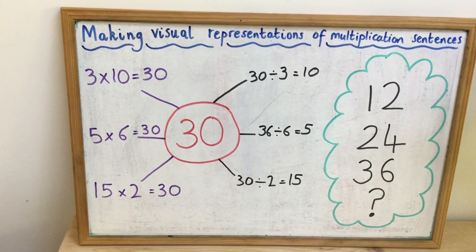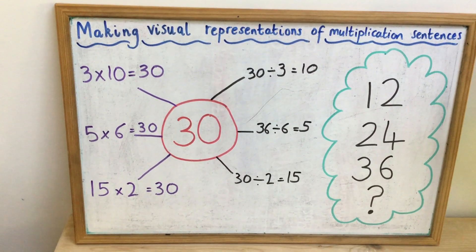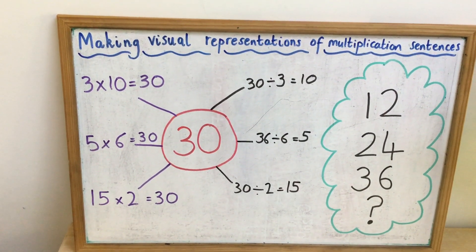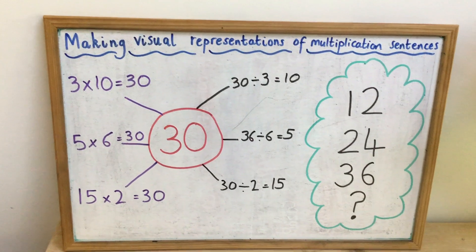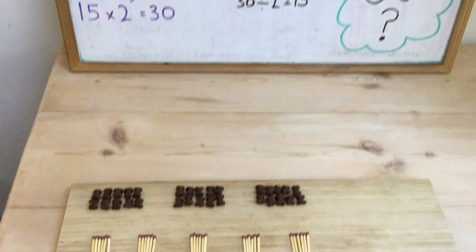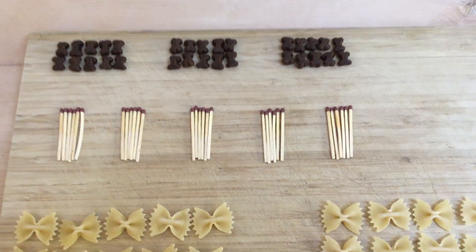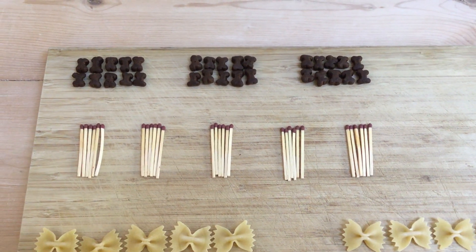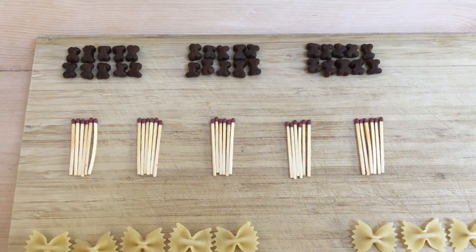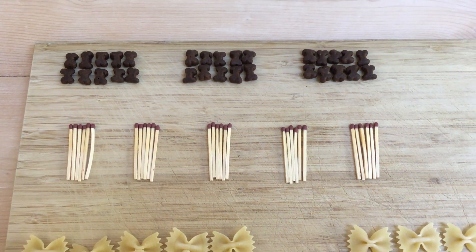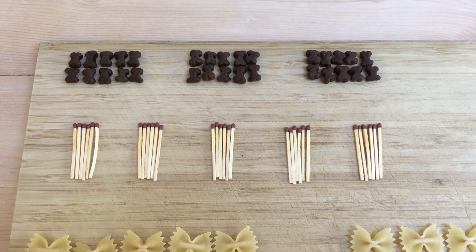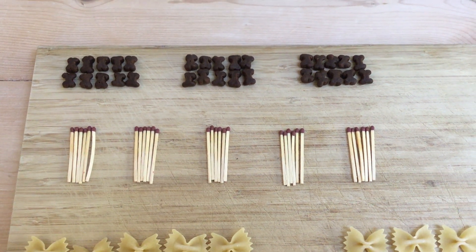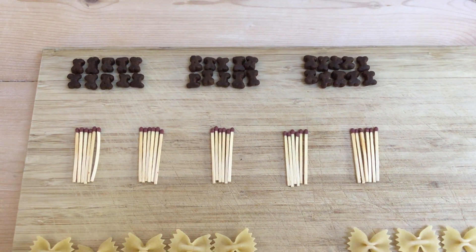The next visual representation I wanted to make was to show that 5 times 6 is 30. And this time I decided that I was going to use matchsticks. So here is my visual representation of 5 times 6 using matchsticks. So there are 5 groups of matchsticks. And in each group there are 6 matchsticks. And that shows me that 5 times 6 is 30.